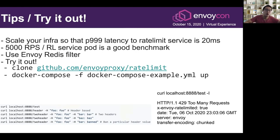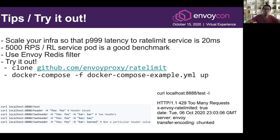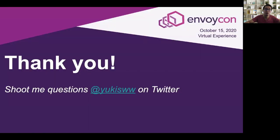Some tips: scale your infrastructure so that your P99.9 latency to the rate-limit service is 20 milliseconds and not much more — otherwise you're going to have a lot of fail-opens. 5,000 requests per second per rate-limit service pod is a pretty good benchmark. Use the Envoy Redis filter to make your life easier, particularly because it gives you Redis performance metrics and shows how Redis performance affects your P99 latency. If you want to try it out on your laptop, clone the repo, run the Docker Compose command, and you can curl localhost and get a 429 response. Thank you — shoot me questions on Twitter if you have any.